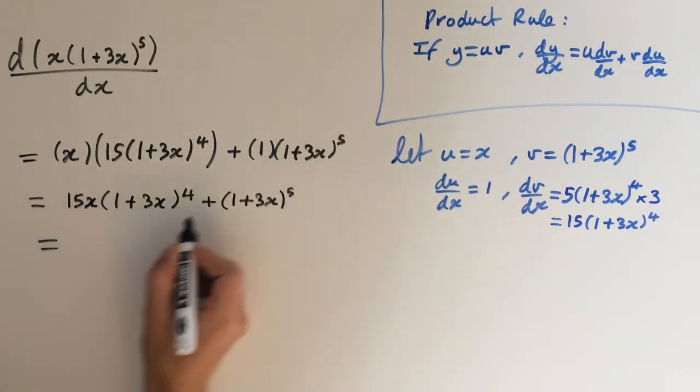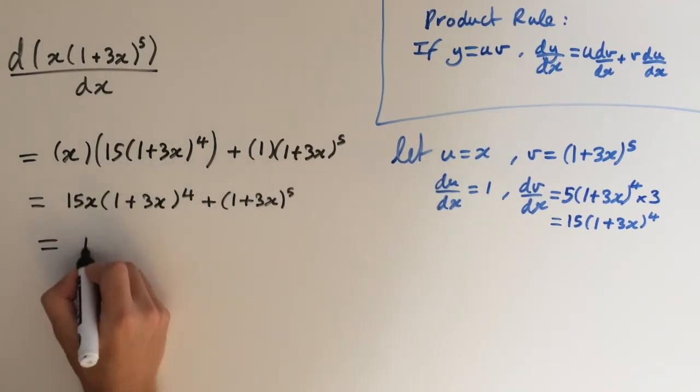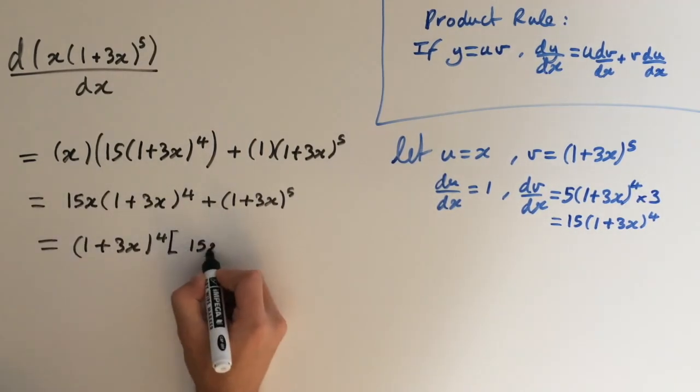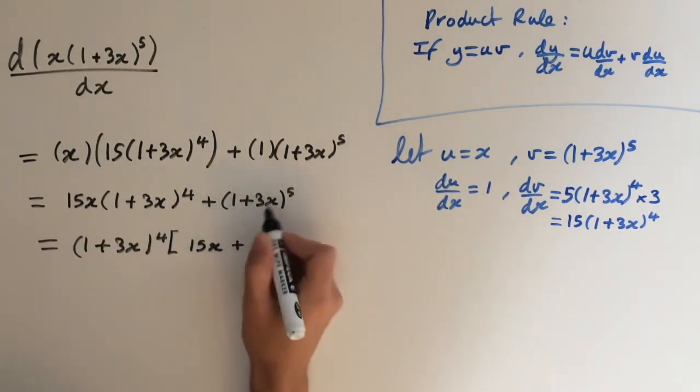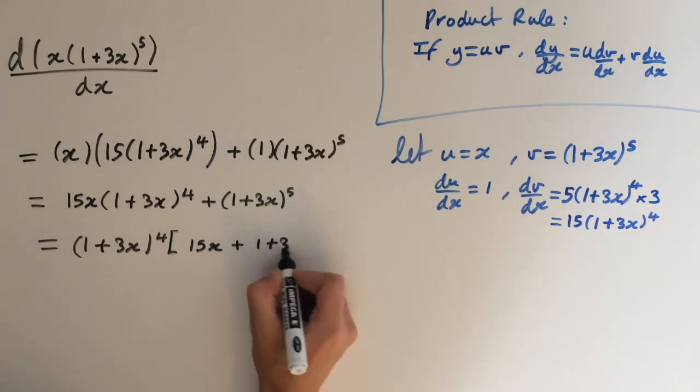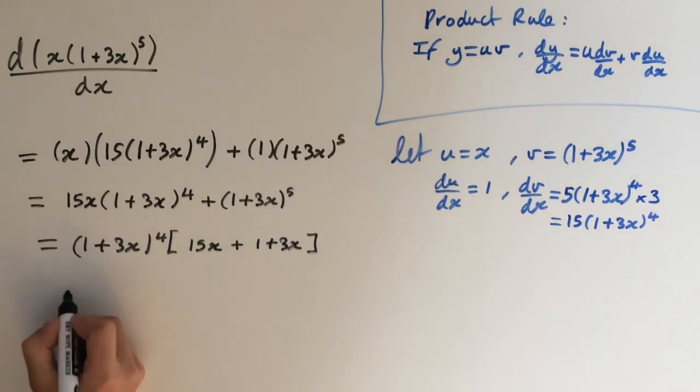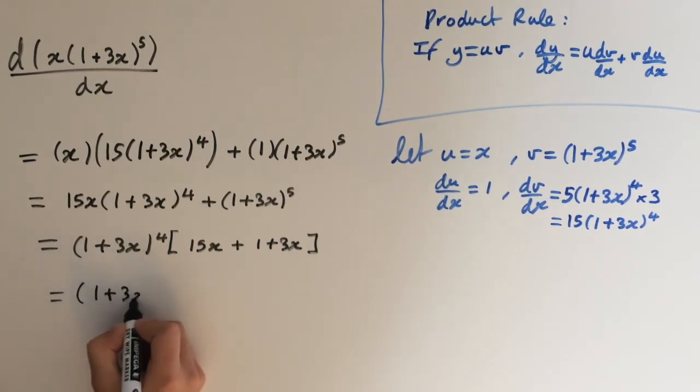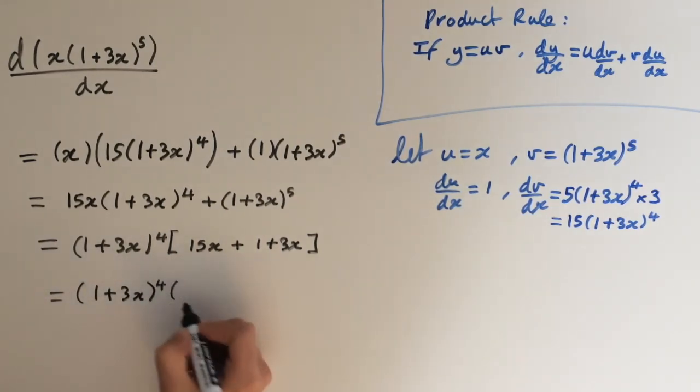And now I'm going to take out a common factor which is going to be 1 plus 3x to the power of 4. So this leaves us with 15x here, plus 1 lot of 1 plus 3x, so this is going to give us 1 plus 3x to the power of 4 times 1 plus 18x.